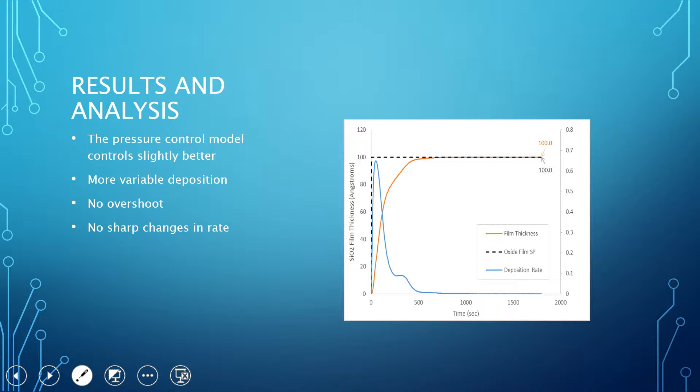Since we were able to control the pressure a little more easily, we have a higher deposition rate at the beginning, so our rise time is much shorter. And because we were able to completely shut off the reactant feed, we don't have any overshoot. So this system was slightly more desirable in those respects.